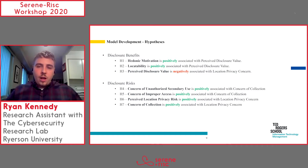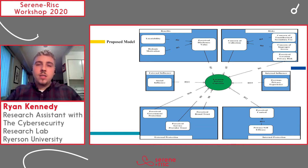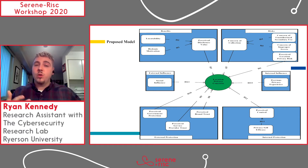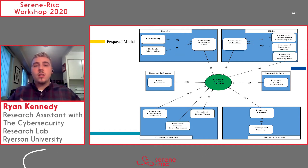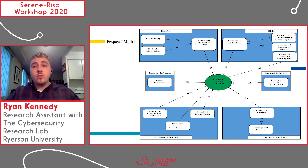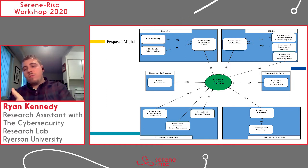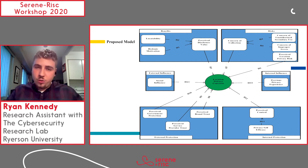I would like to explain the hypotheses by taking a look at the proposed model. On the top left in the benefit category — all the positive aspects of disclosing your location or giving information to your smartphone — we have locatability and hedonic motivation, both of which are hypothesized to positively influence perceived disclosure value, which in turn is hypothesized to negatively influence location privacy concerns. The more beneficial disclosing your information, the less you might be concerned about your privacy. On the upper right, we have concern of unauthorized secondary use and concern of improper access, both positively related to concern of collection. Concern of collection and perceived location privacy risk are both hypothesized to positively influence location privacy concerns.